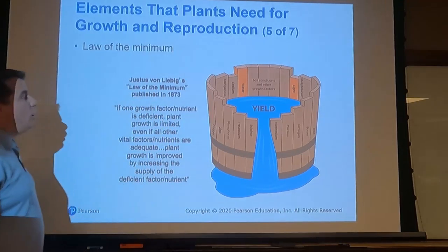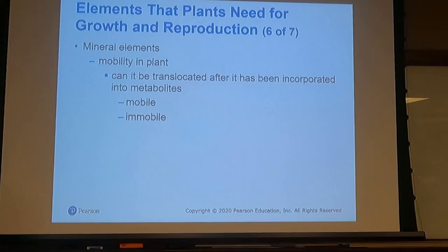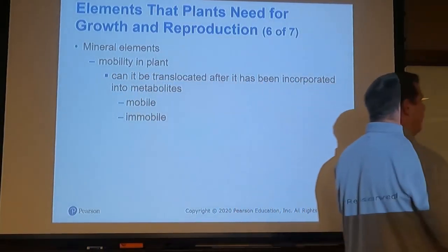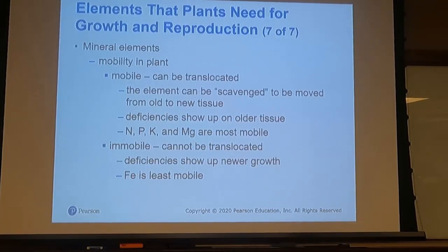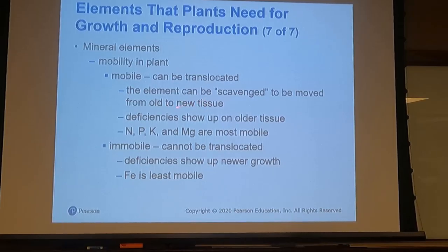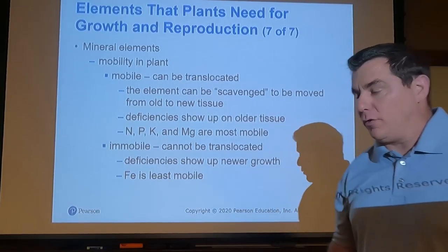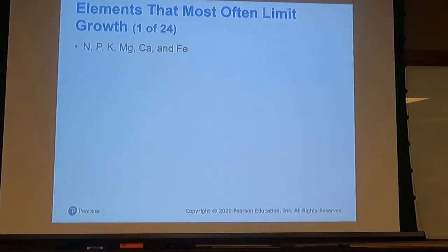Soil pH influences root hairs, root structures, and nutrient availability. We have two terms regarding nutrient mobility in the plant: mobile nutrients can be translocated from old tissues to new tissues, so deficiency shows up on older tissue. Immobile nutrients cannot be translocated, so deficiency shows up on new growth.